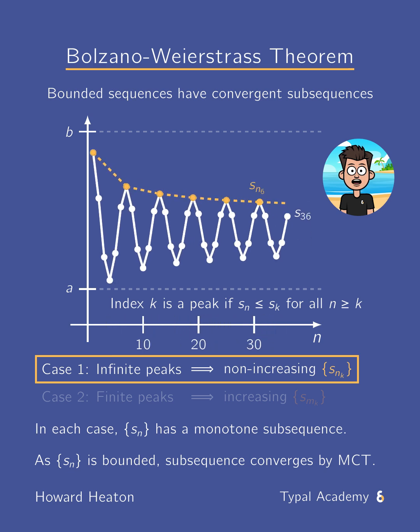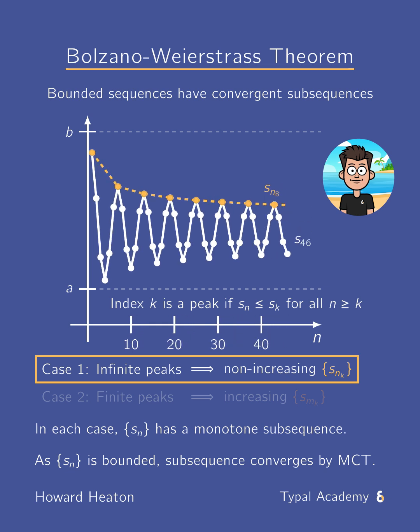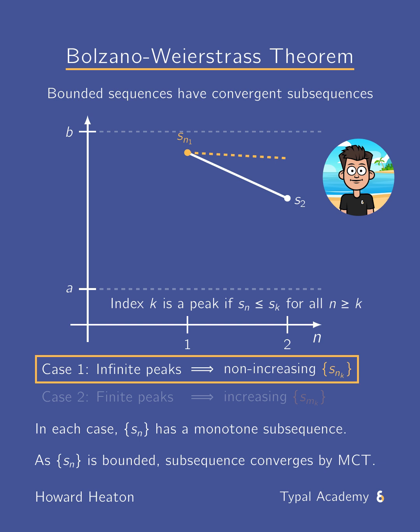Intuitively, a peak is a little bit like a mountain peak that, if you stood there and looked down the line at all future indices, you'd be standing higher than any point you see.